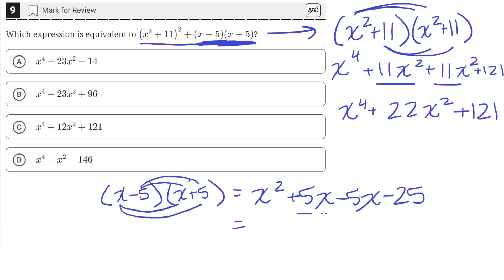And if we add these two like terms, so we'll have x squared, and then these will cancel out, and then minus 25 here.